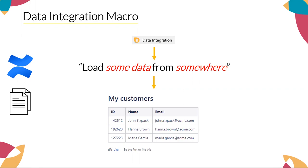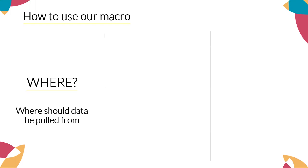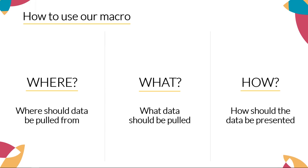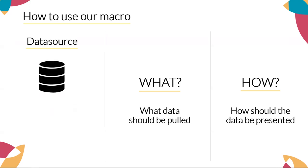There are three main questions that must always be answered every time you want to use our macro: Where should the data be pulled from? What data should be pulled? And how should the data be presented on our page? We want users to answer the 'where' question by giving us a data source — basically a configuration entity representing an external system. For our framework, this could be either a REST API or a JDBC database. With these two types, we're covering a really broad range of systems. Data sources should also contain authentication details so we can successfully talk to the system.